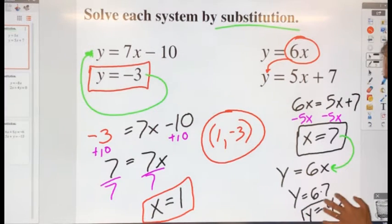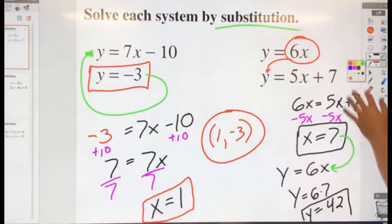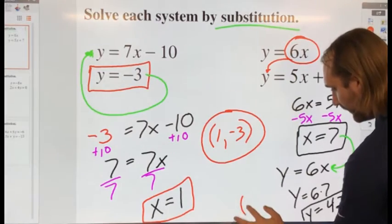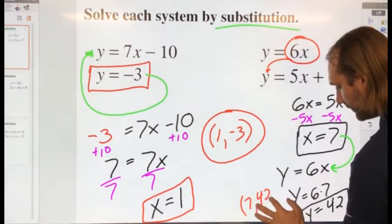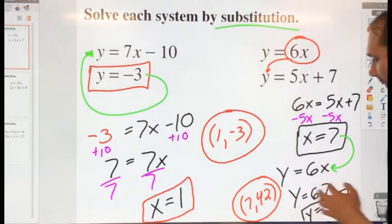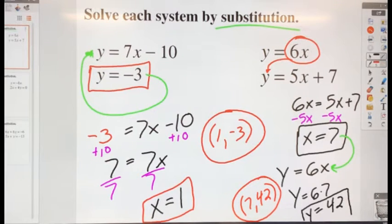So I get the values of x equals 7 and y equals 42. If I were to write that as a solution, I'd write it as ordered pairs, 7 and 42, just like that. Because if I were to graph this, I would get this as my intersecting point between those two lines.